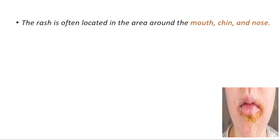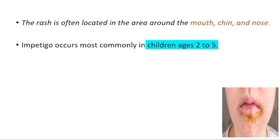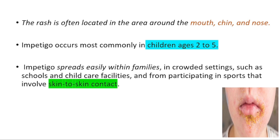After the crust falls off, they form red marks that fade without leaving scars. The rash is commonly around the mouth, chin, and nose. It typically occurs in children ages 2 to 5, and it spreads easily within families and in crowded settings such as schools, childcare facilities, and from participating in sports that involve skin-to-skin contact.